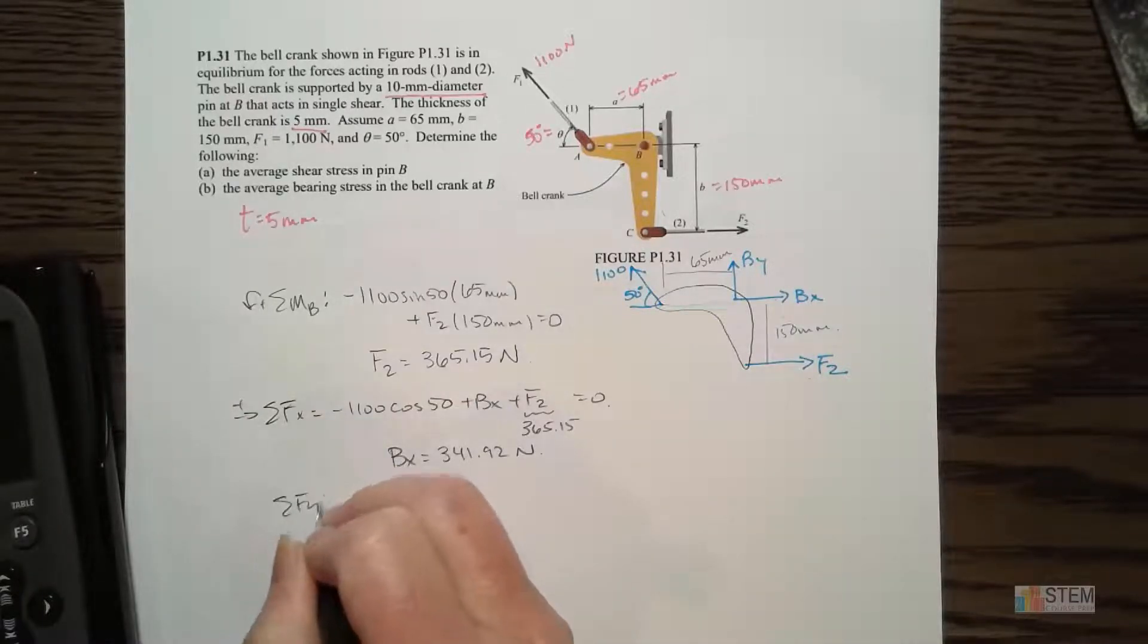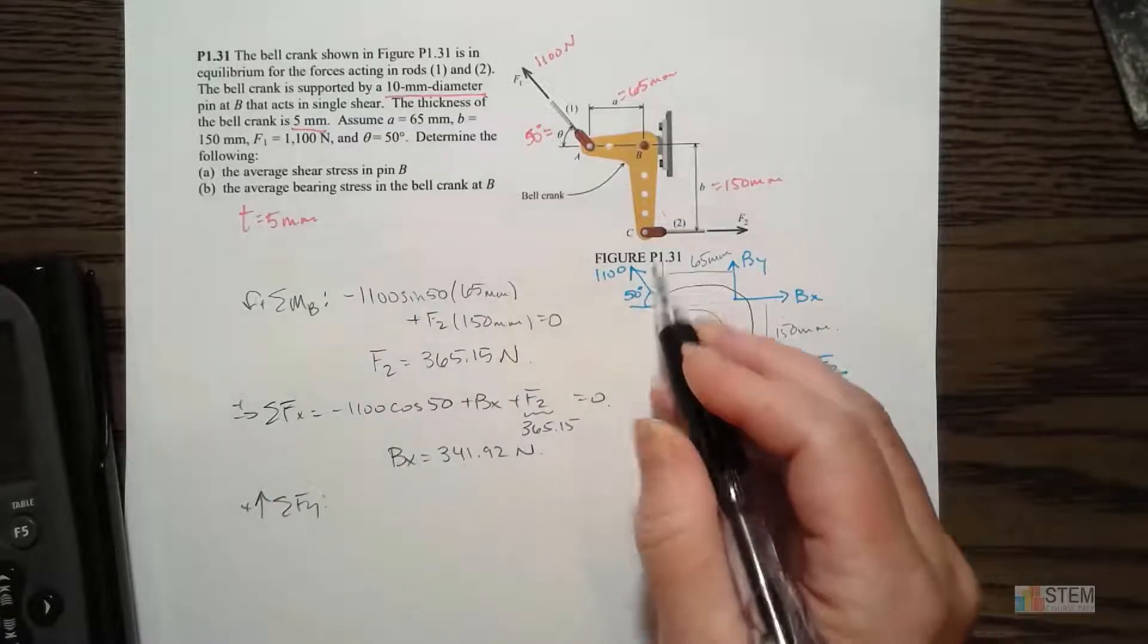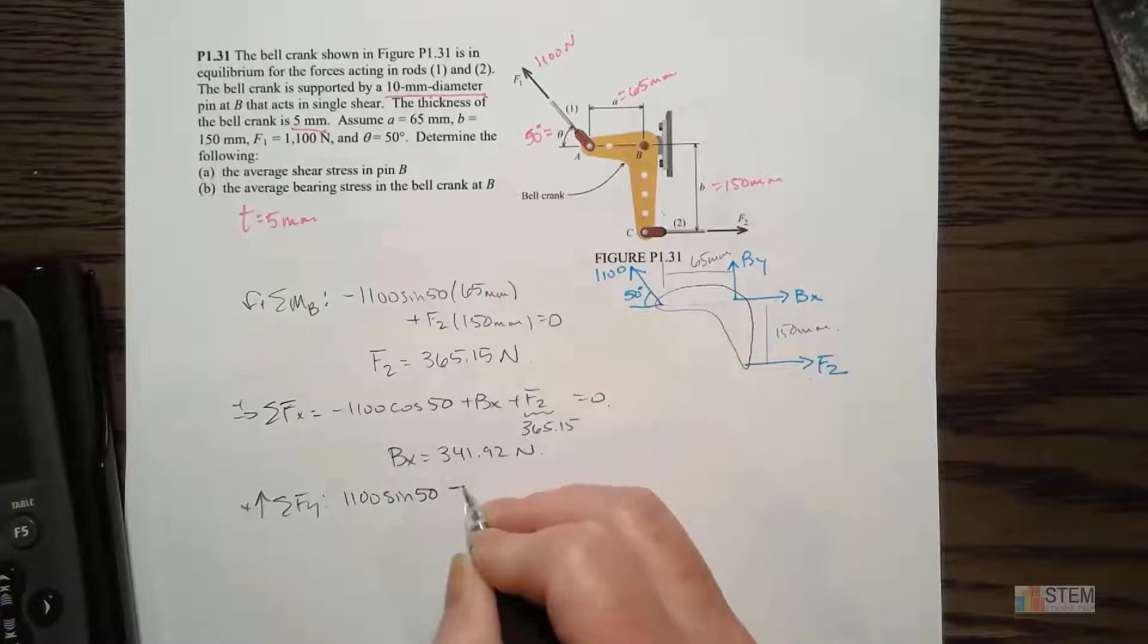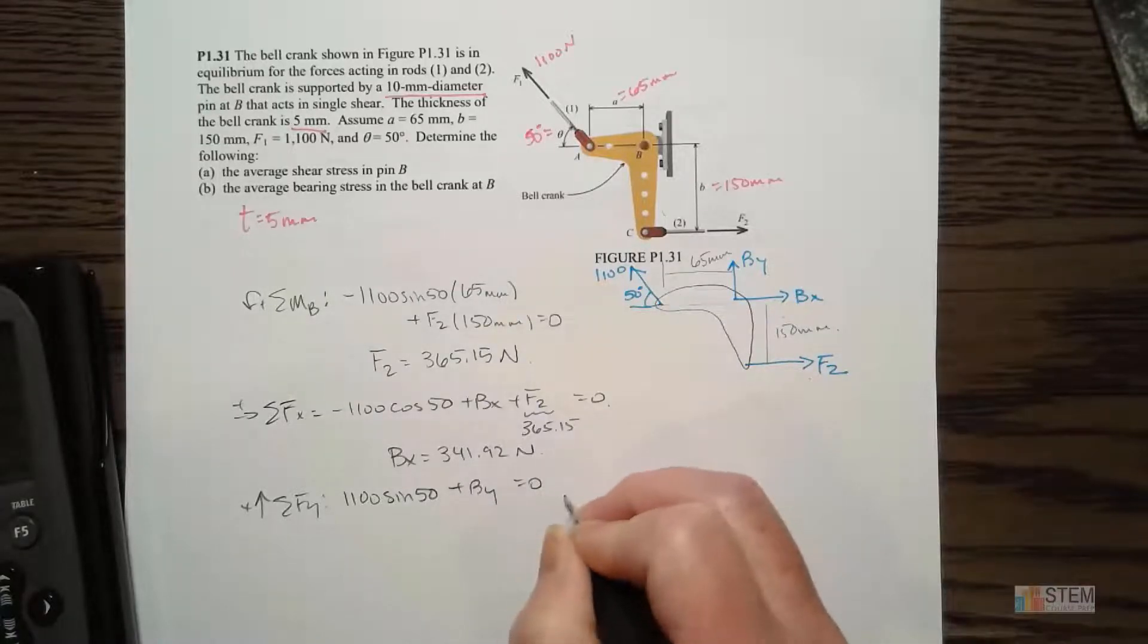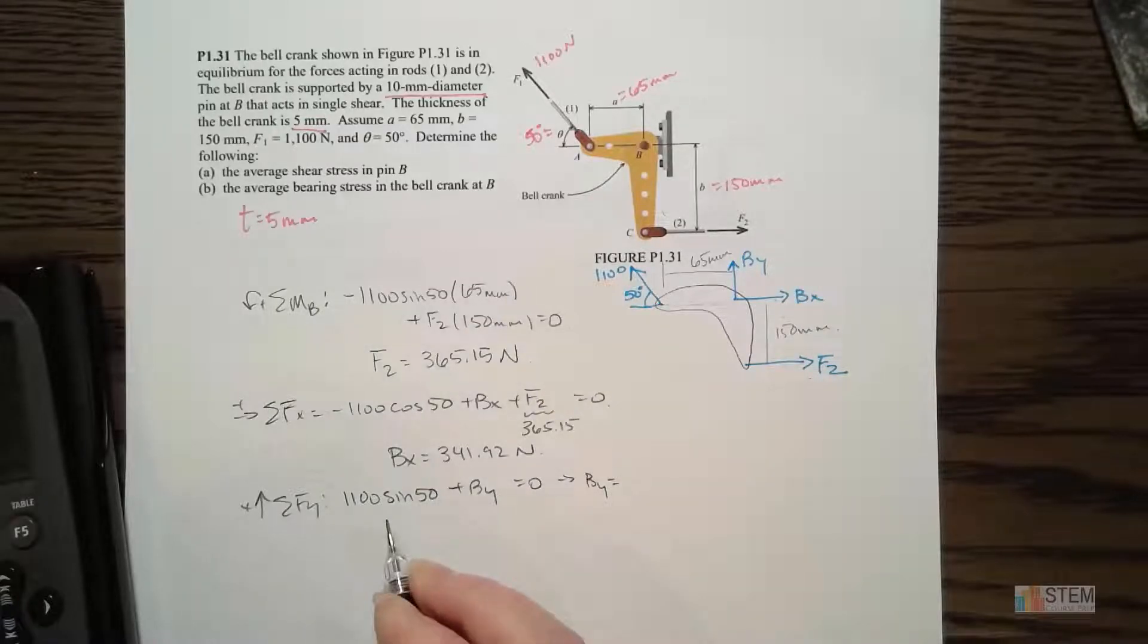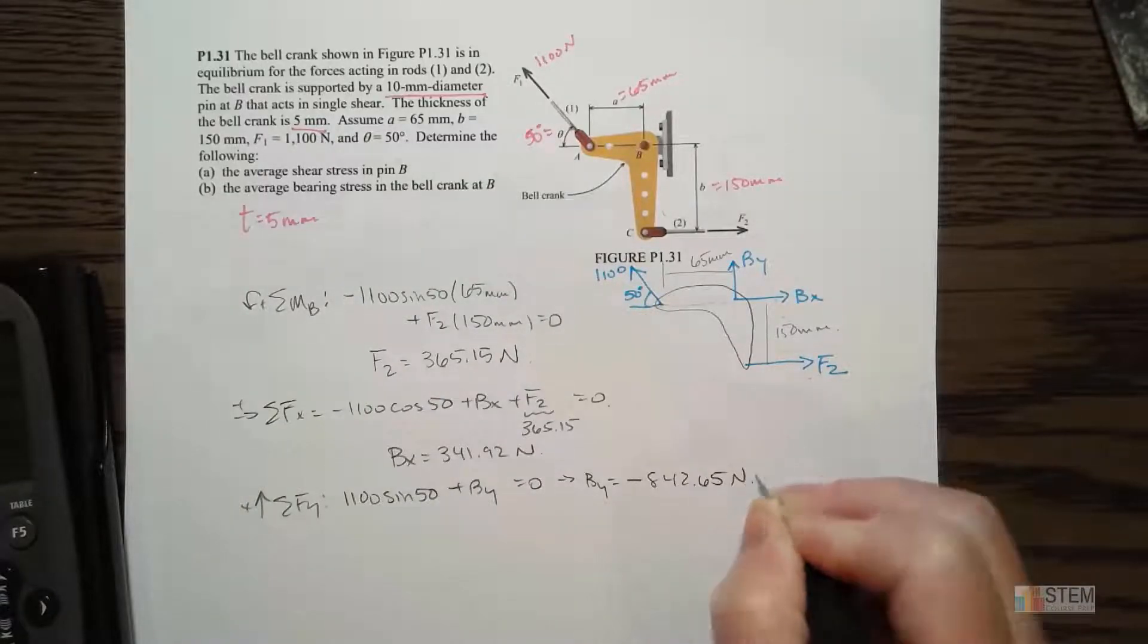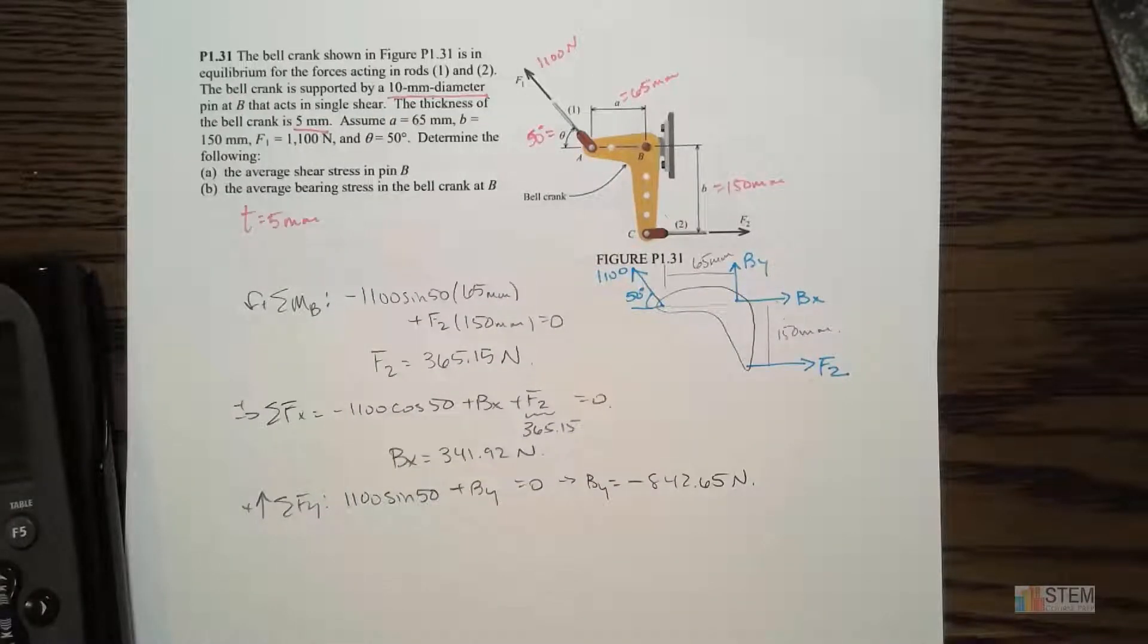Now let's do Y. Up's positive. We've got a vertical component here. 1100 sine 50 is going up, so it's positive. Let's put that. We've got a positive BY. And then that's all we got. So set it equal to zero. So now we can find BY. Now, BY is going to be negative, when I move this over. The value is 842.65, and that's Newtons. So the negative here just means it should be drawn going down.